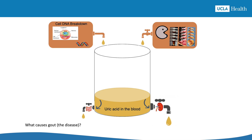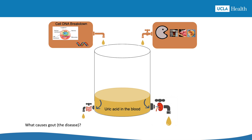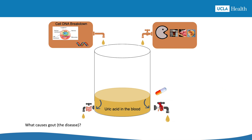Most of the time, the reason for a high uric acid level is that the kidneys are not getting rid of uric acid as well as they should. You might have been born with kidneys that don't eliminate uric acid as well as others — this is probably the most common cause. You might develop kidney disease later in life, or you might start a medication that interferes with your kidneys' ability to remove uric acid. Any of these things can cause your uric acid level to go up.